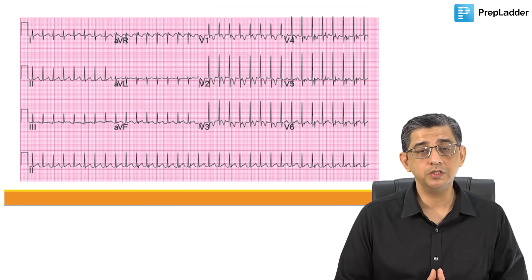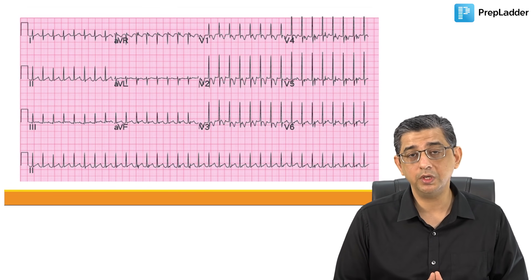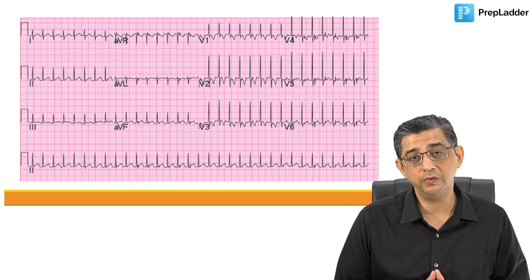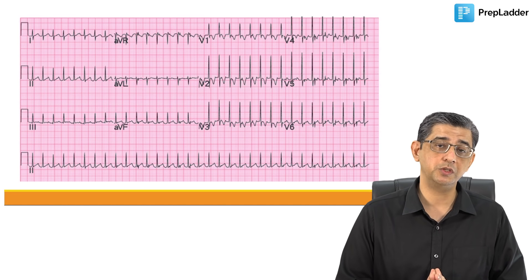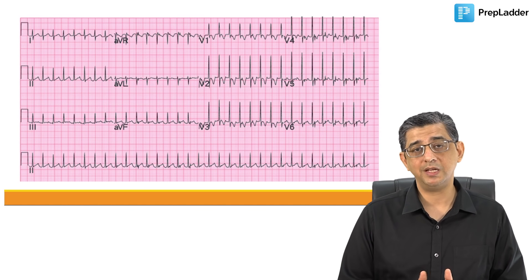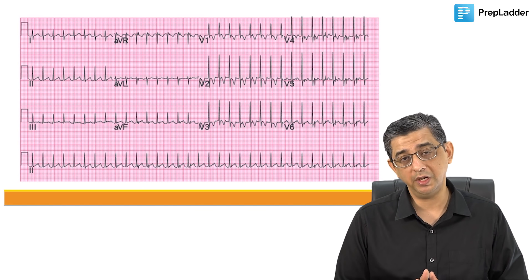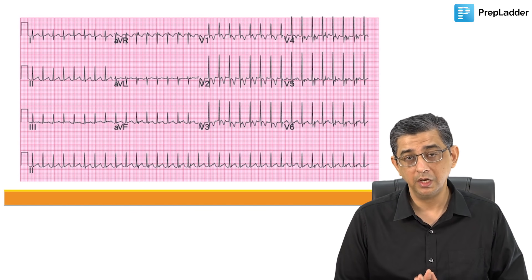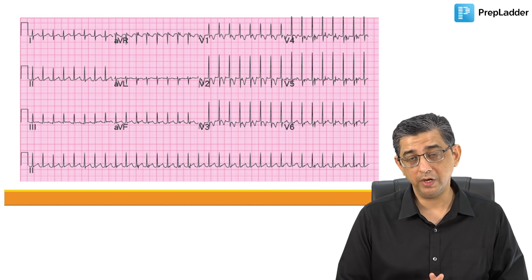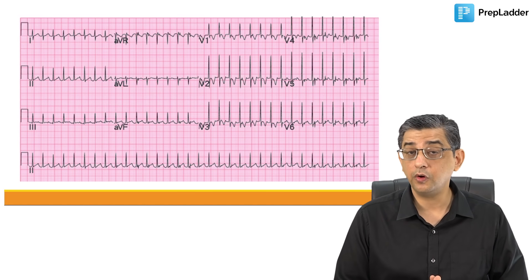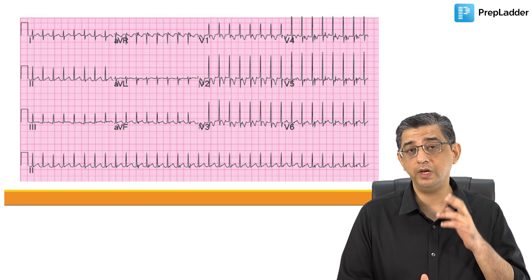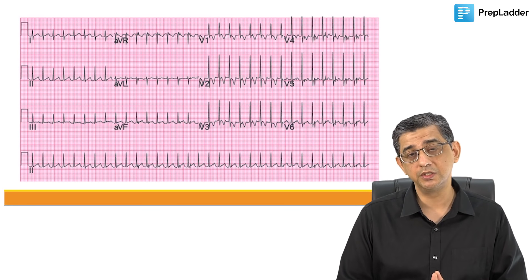The ECG of this patient was showing a very characteristic pattern of PSVT — a paroxysmal supraventricular tachycardia, also known as AV nodal re-entrant tachycardia. So we need to analyze why this AV nodal re-entrant tachycardia was contributing to the development of these prominent neck pulsations.